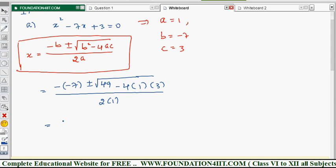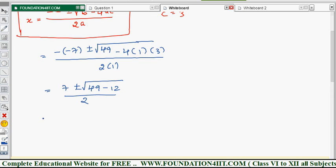Just simplify this. Minus minus is plus 7, plus or minus root 49 minus 4 times 3 is 12, by 2 into 1 is 2. Now root 37 value we need to find out, so the long division method we can apply for this.